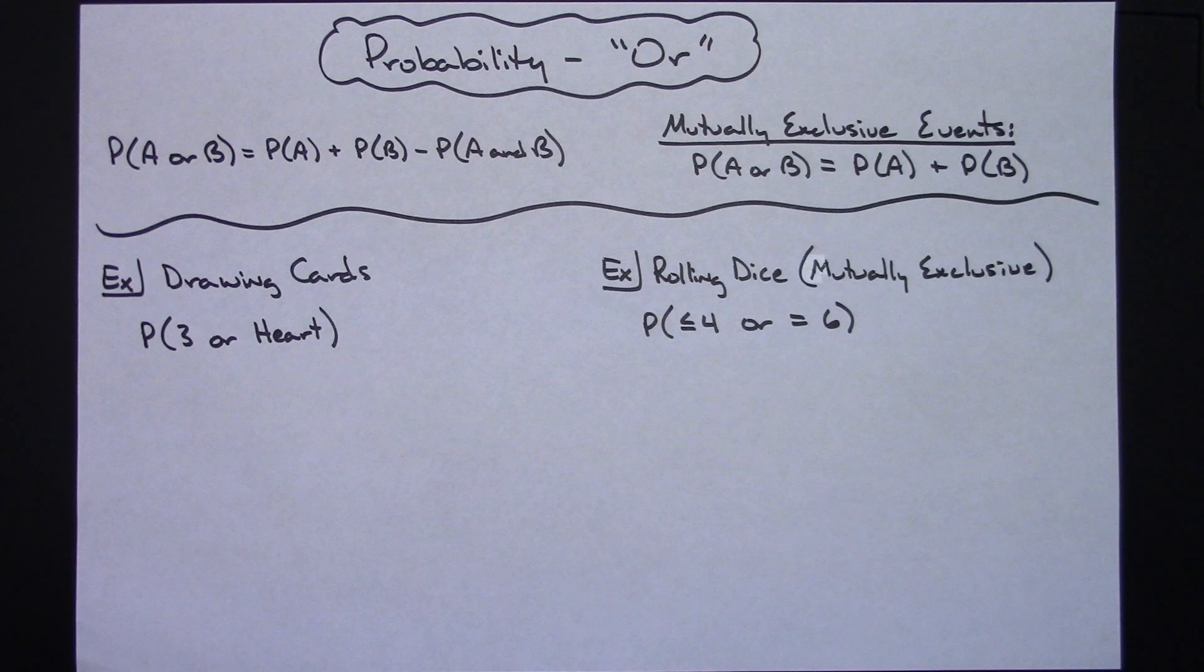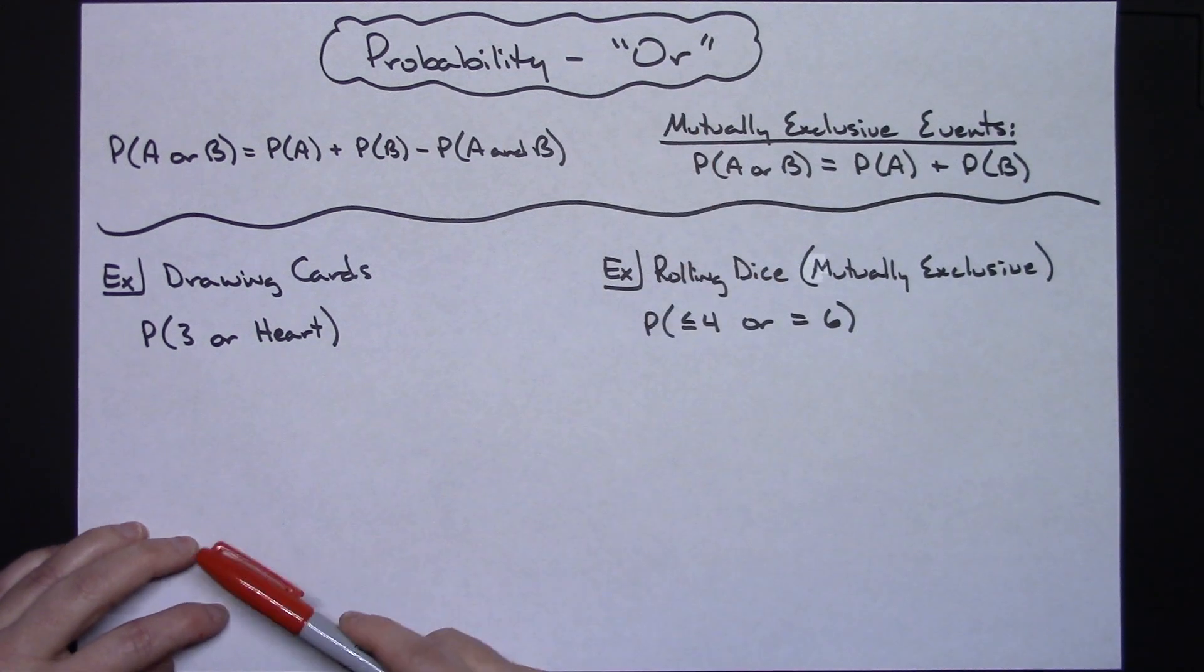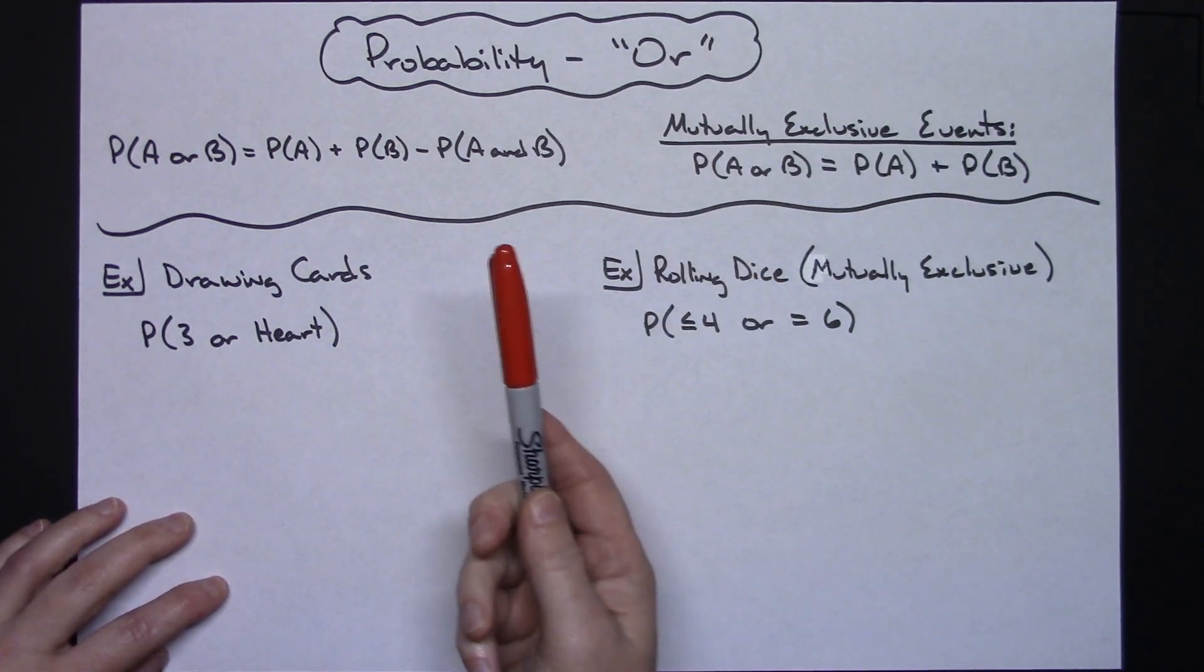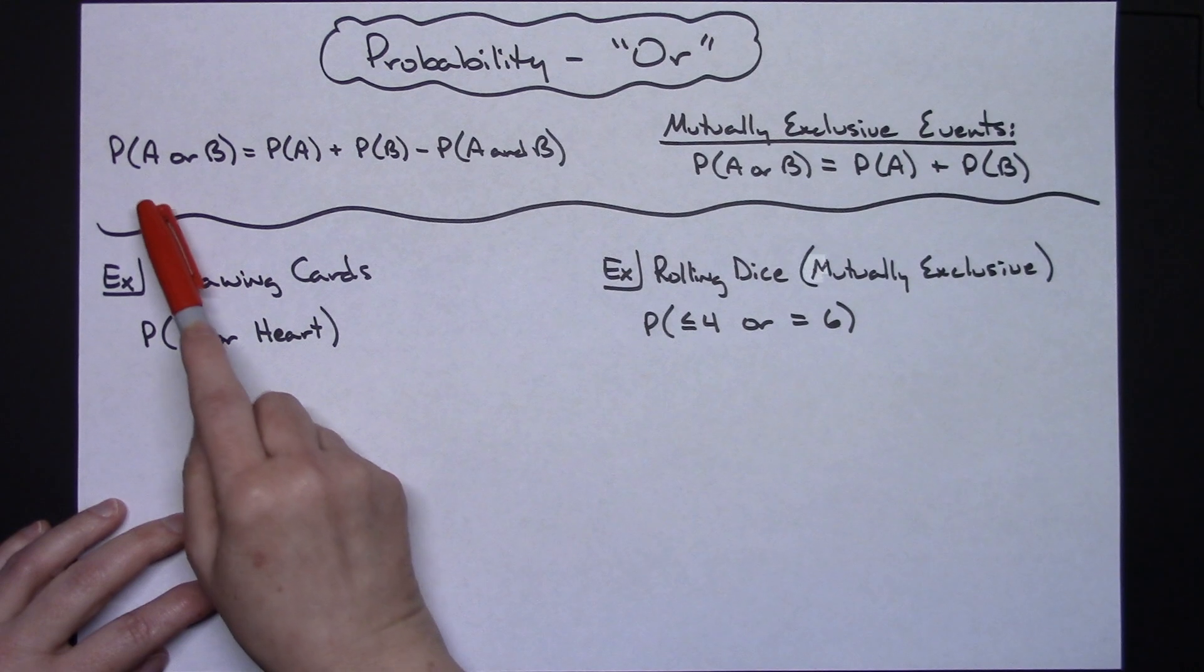In this video I'm going to work out a couple of really straightforward simple probability questions that deal with OR. For an OR probability we've got a couple formulas we're going to take a look at.